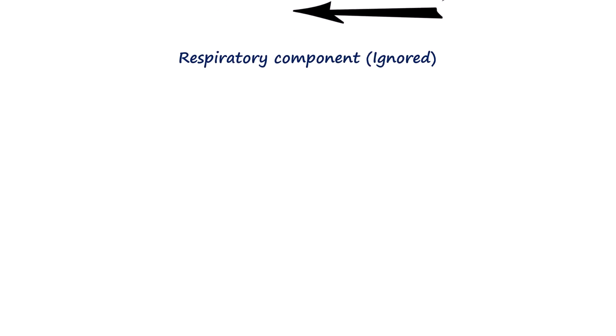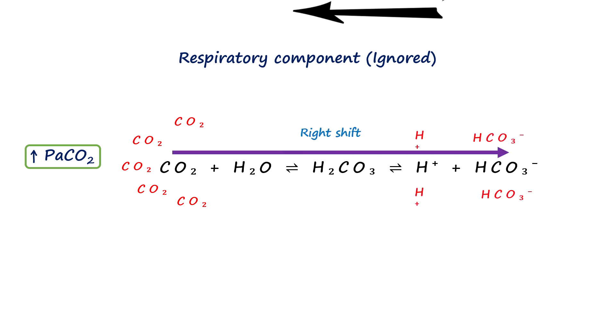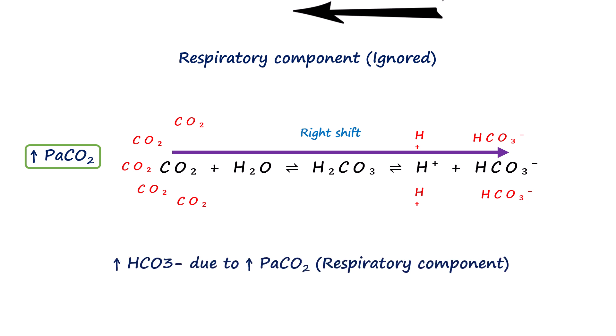Let's look at the respiratory site to see why it is ignored first. As we can see, the reaction can start from the respiratory site affecting bicarbonate level. For example, when PaCO2 increases, CO2 reacts with water to form carbonic acid which then dissociates into hydrogen and bicarbonate. The pH can become low due to hydrogen ion accumulation, but the concurrent bicarbonate rise ensures that the pH is normalized because bicarbonate buffers hydrogen. Here, the rise in bicarbonate is CO2-driven or passive and is not metabolic alkalosis.